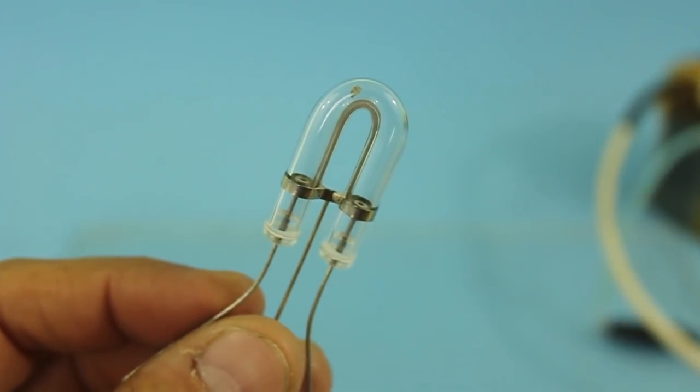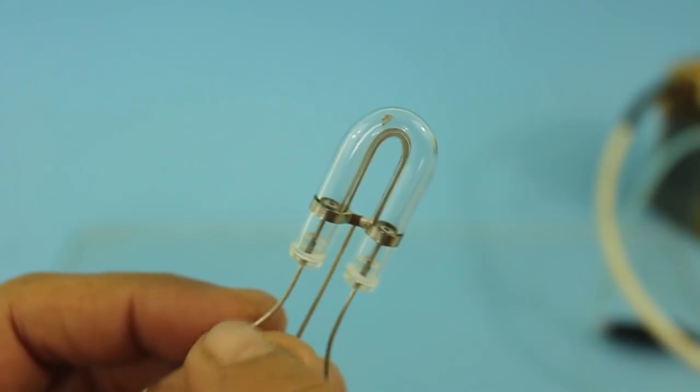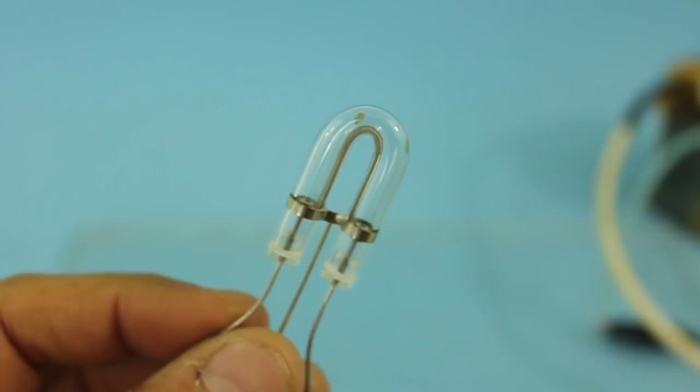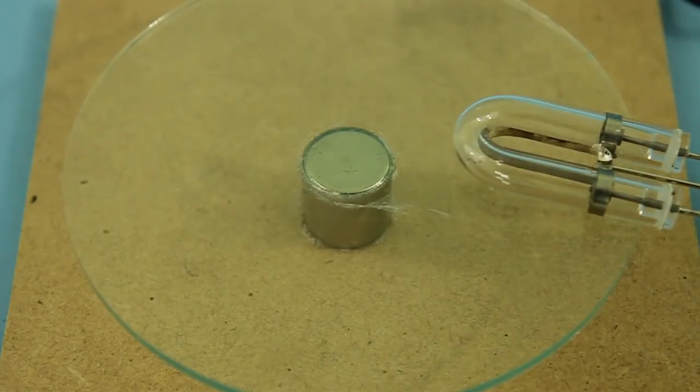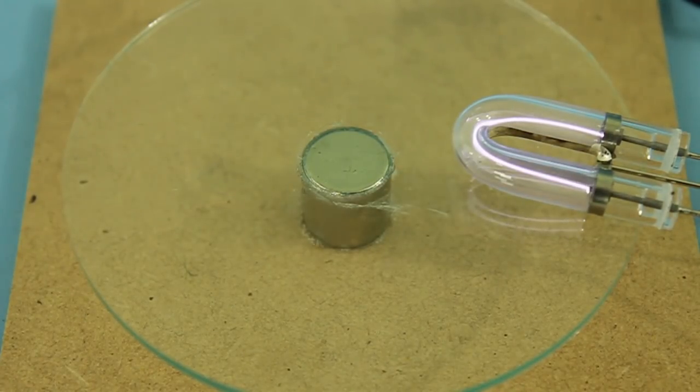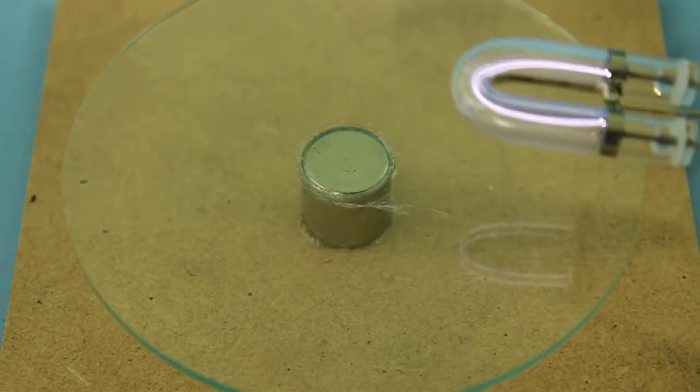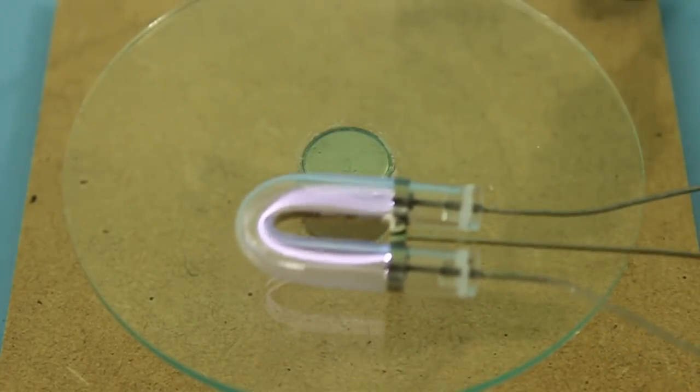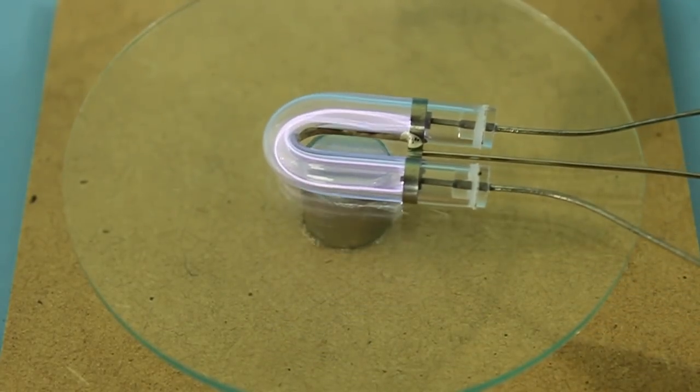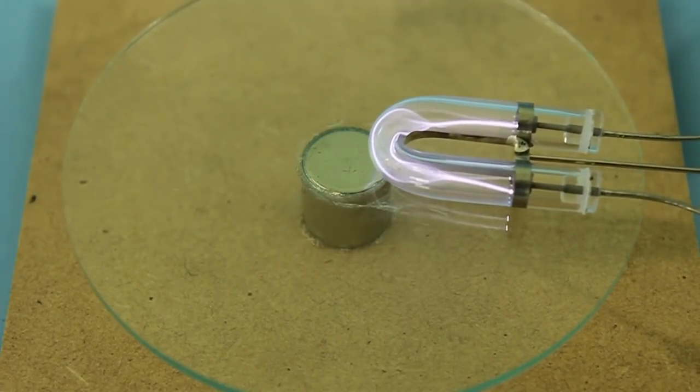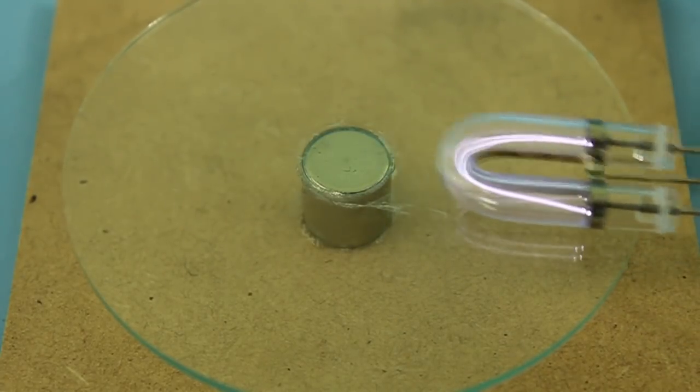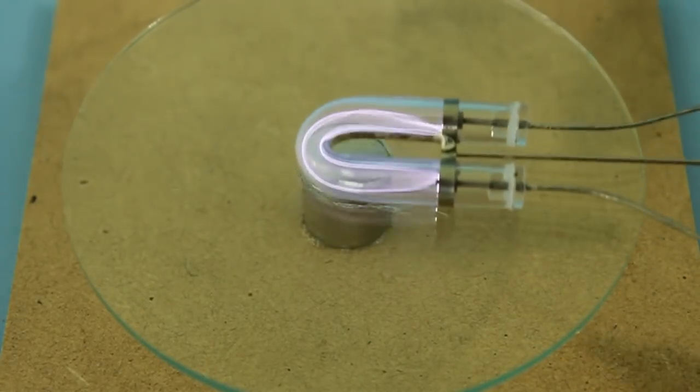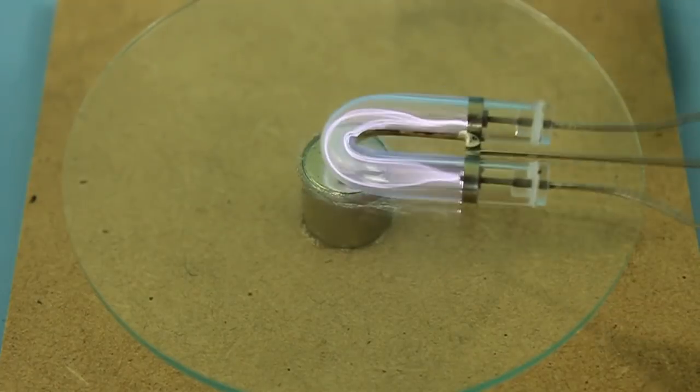Let's now try the experiment again, but passing the high voltage arc through this flash tube. I will try first with AC.